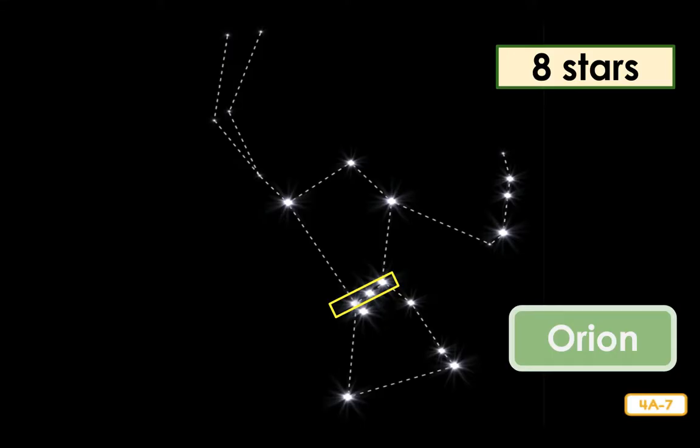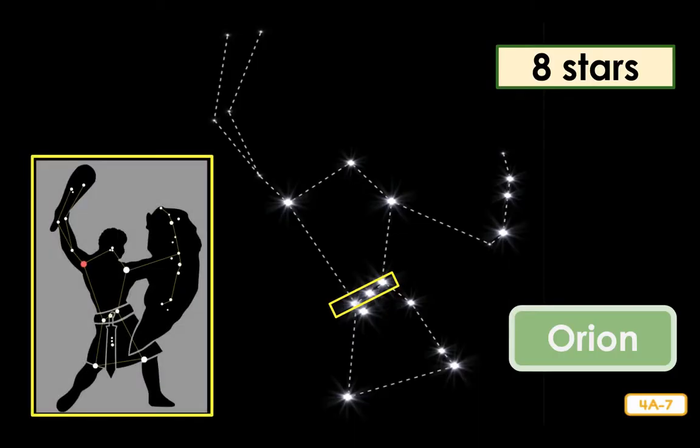As you can see, it takes little imagination to look at these stars and see a hunter. The single star in the upper left is imagined to be the beginning of a raised arm, which is holding a club or a sword. With his other arm, imagined to extend from another single star, he holds a shield.